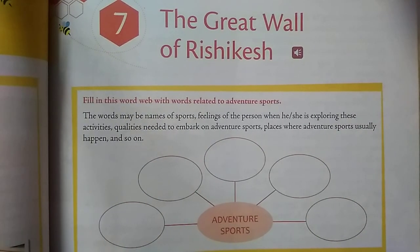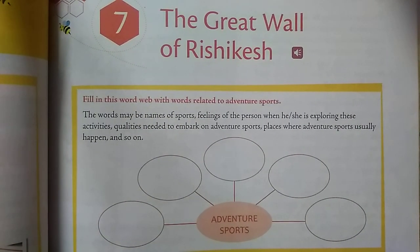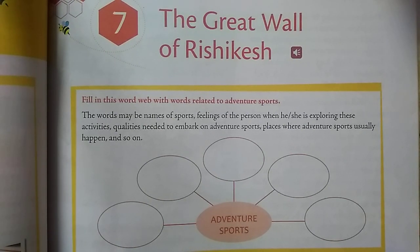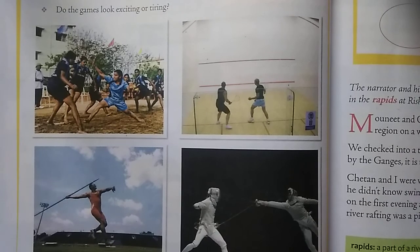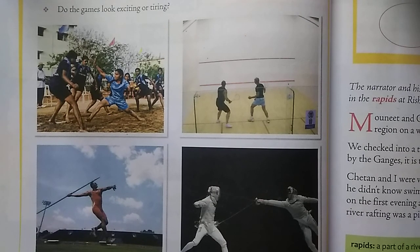Hello everyone, today we are going to do our seventh class English textbook lesson number seven: The Great Wall of Rishikesh. Before going to the lesson, let us do the warm-up page. Look at the four pictures given here of adventurous sports on page number 80 of your textbook.